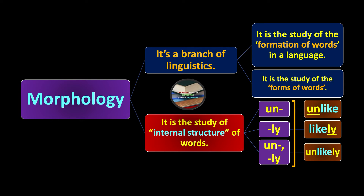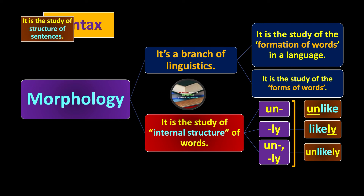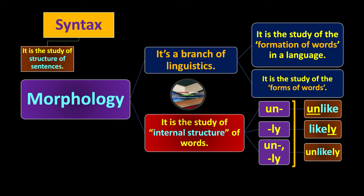For example, 'come' becomes 'came'. Sometimes when you change from singular to plural, like 'book' and 'books'. There are different mechanisms and different ways in which we create, form, and make new words. This is basically the area of study of morphology.